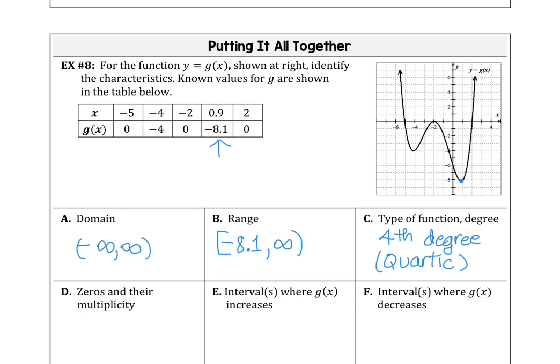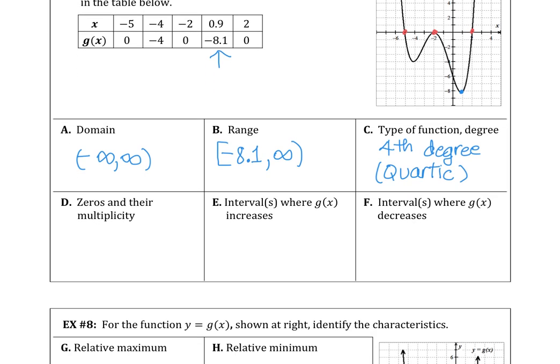The zeros and their multiplicity — this goes back to algebra two. There's a zero at x = -5, a zero at x = -2, and a zero at x = 2. Recall from algebra that when the graph touches the x-axis and turns away, that means multiplicity two — it behaves like a parabola. So: x = -5 with multiplicity one, x = 2 with multiplicity one, but x = -2 has multiplicity two (even multiplicity).